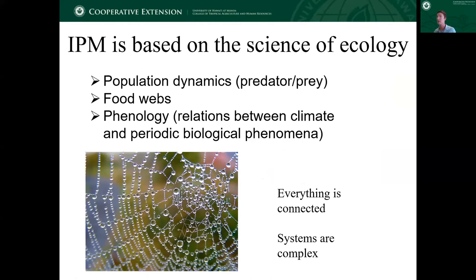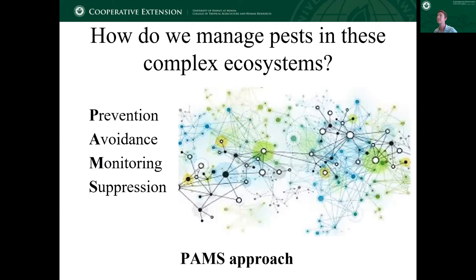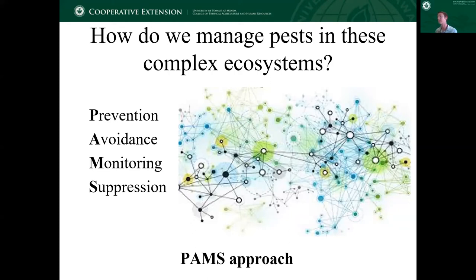IPM is really based on the science of ecology — understanding things like population dynamics, predator and prey relationships, food webs, and also phenology, which is the relation between climate and periodic biological phenomena, like periods of flowering or dormancy. It's a way of understanding that everything is connected, and that the systems we're managing as farmers or agriculturalists are very complex. So how do we manage pests in these complex ecosystems? There's something called a PAMS approach — prevention, avoidance, monitoring, and suppression — thinking about different types of approaches and how we can try to address pest issues from many angles.